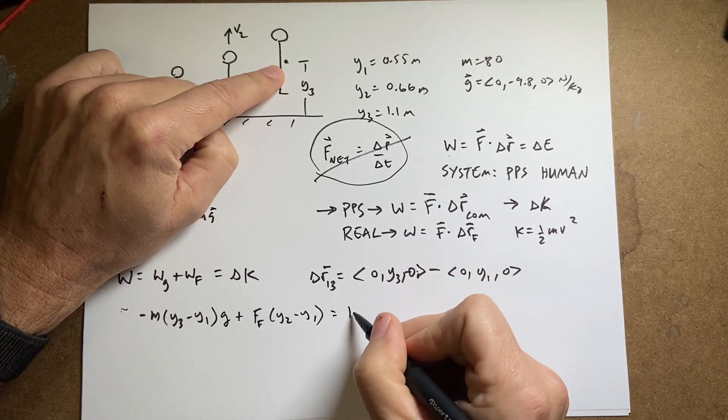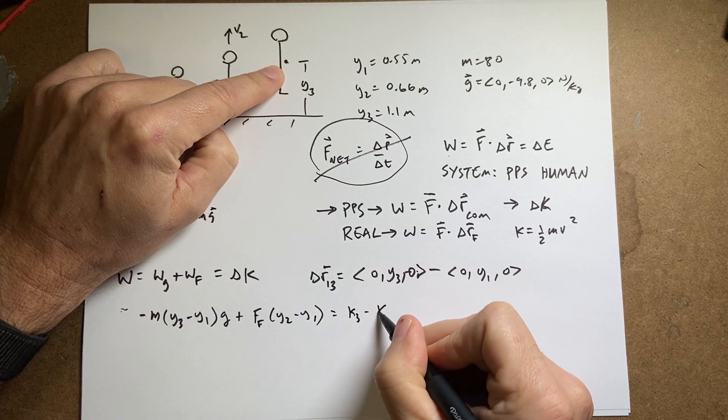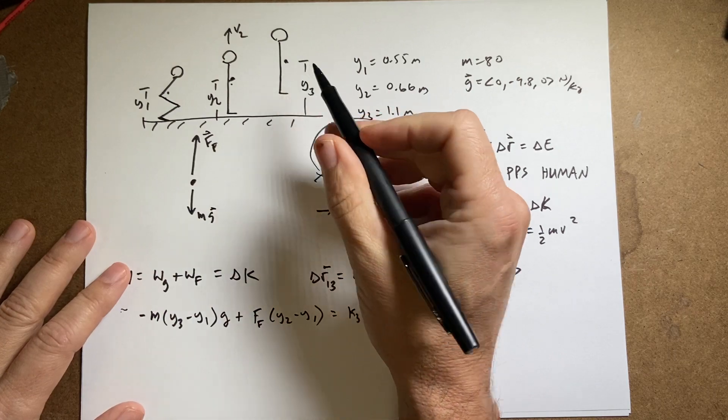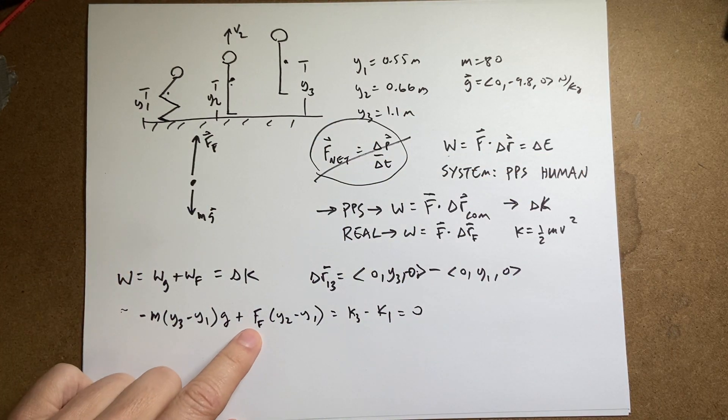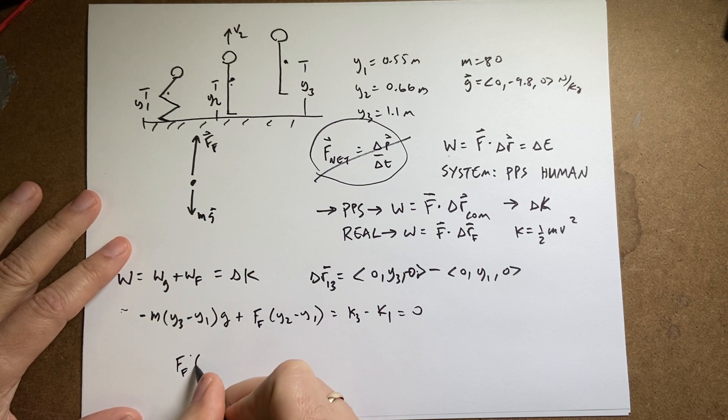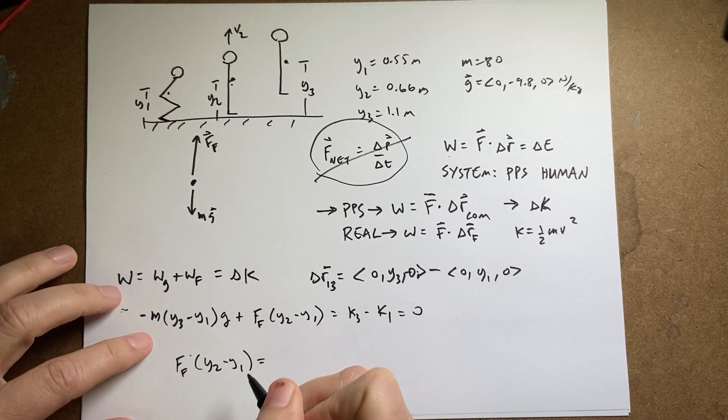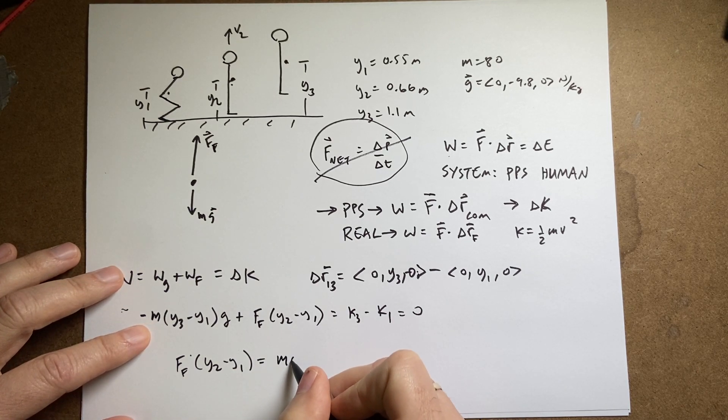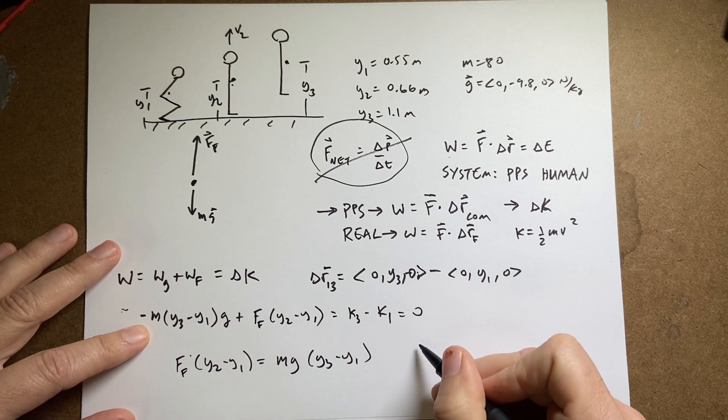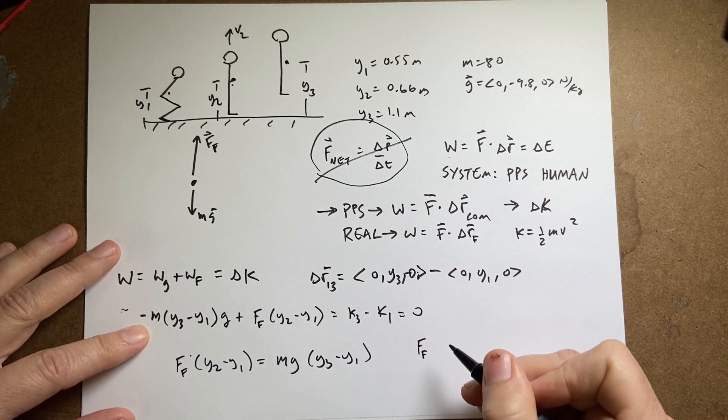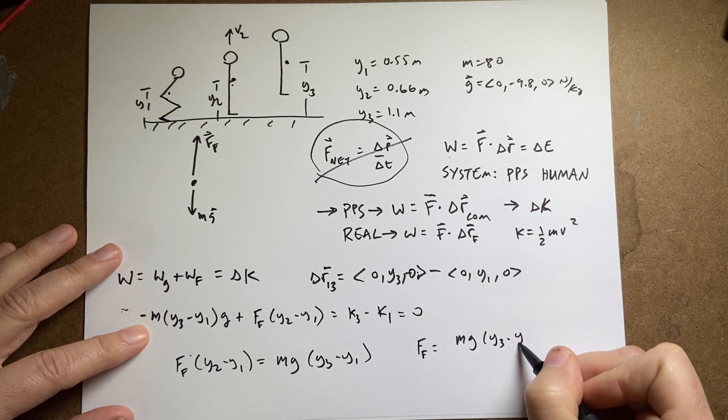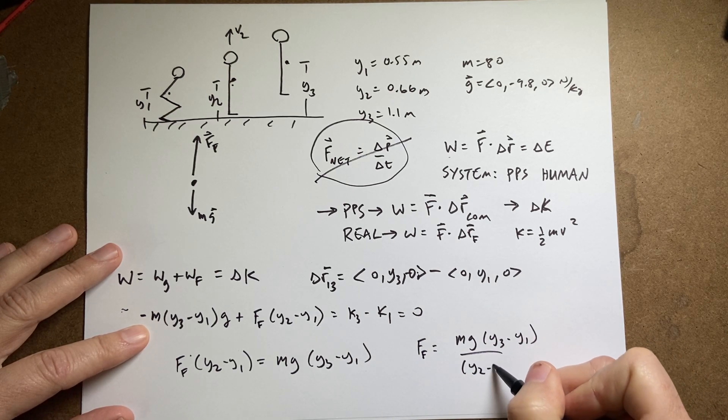The change in kinetic energy is going to be k3 minus k1. But guess what? Both of those are 0. The person starts at rest, the person ends at rest. So these are equal to 0. Now I can use this to solve for the force of the floor. So the force of the floor, ff, times y2 minus y1 equals mg y3 minus y1. Divide both sides by y2 minus y1 and I get the force of the floor. The magnitude is going to be mg y3 minus y1 over y2 minus y1.